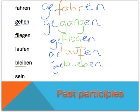Sein, as we might expect, is a totally and utterly irregular verb — meaning to be. The stem is actually wes — no rhyme or reason, you just have to learn it. So GE at the beginning, EN at the end: gewesen. So there are some common past participles: gefahren, to travel; gegangen, to go; geflogen, to fly; gelaufen, to run; geblieben, to stay or remain; and gewesen, to be.